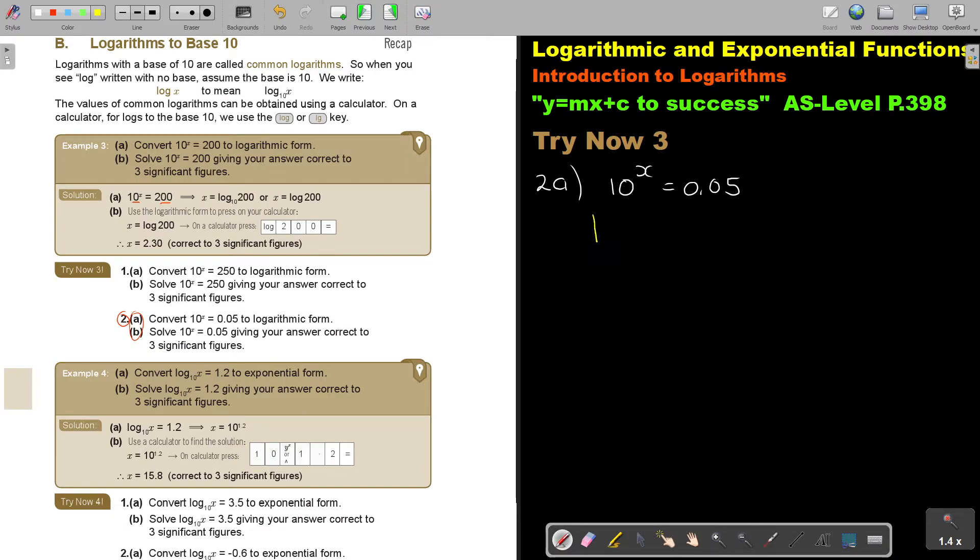So if I'm doing that, I'm going to write the 10. And what do I do? I swap these two. So I have log 0.05, and that is equal to x.